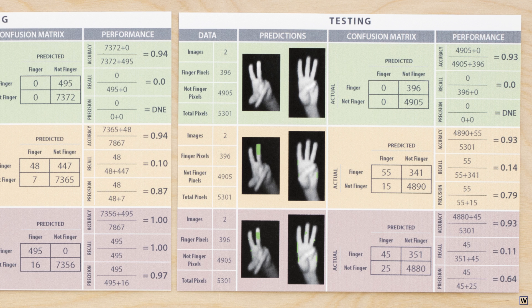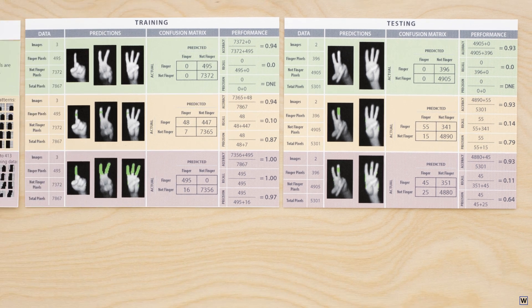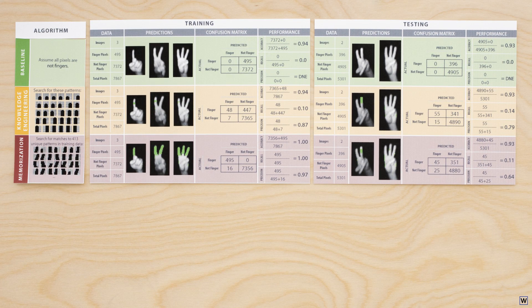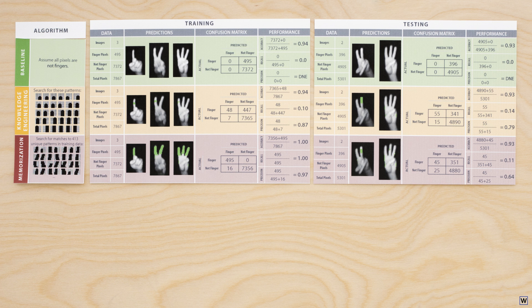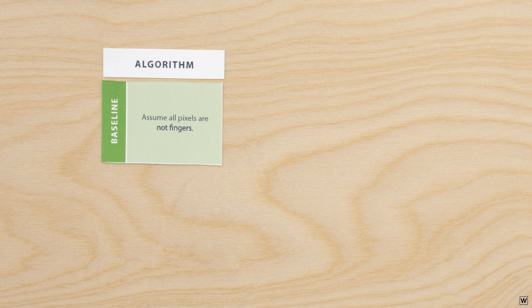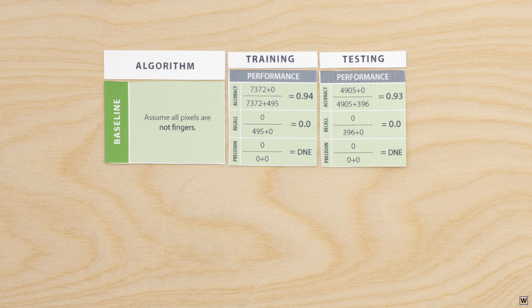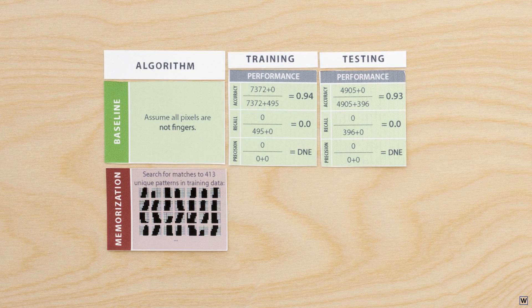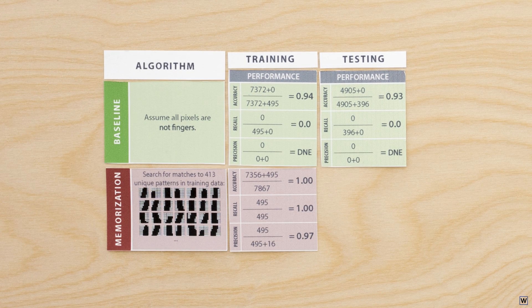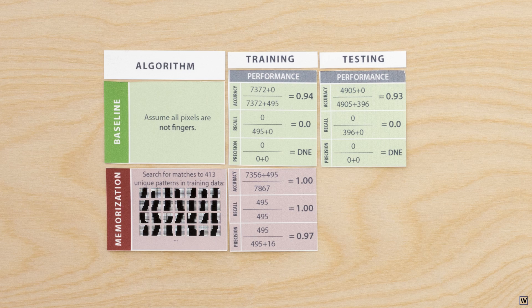Now that we have a deeper understanding of where these approaches went wrong, let's consider how this understanding might help us develop a better strategy for learning to recognize fingers. On one hand, we have our baseline approach, which doesn't perform well on training data, but does generalize well. On the other hand, we have our memorization approach, which performs flawlessly on our training data, but generalizes terribly.